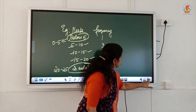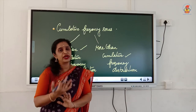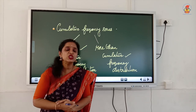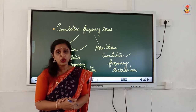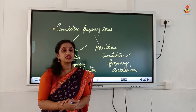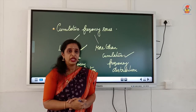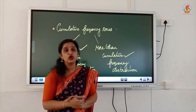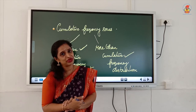Now we will move on to the next type: cumulative series, or cumulative frequency distribution. The peculiarity of cumulative frequency distribution is that cumulative frequencies are given. There are two types: more than cumulative frequency distribution and less than cumulative frequency distribution. We will learn how to convert a normal continuous series into both.